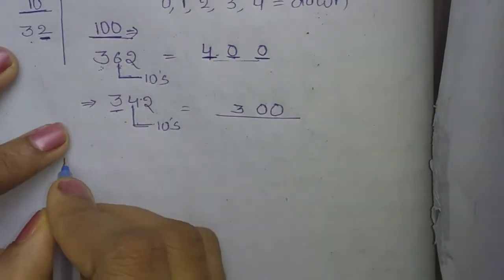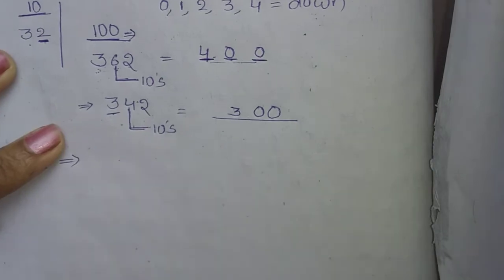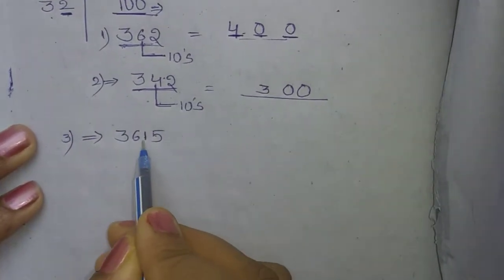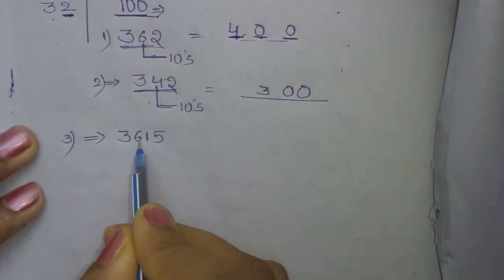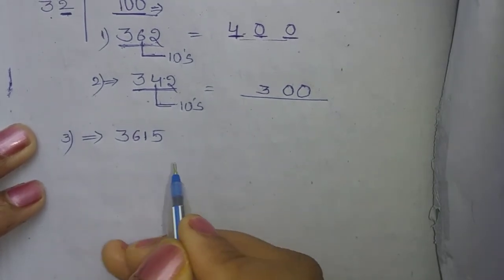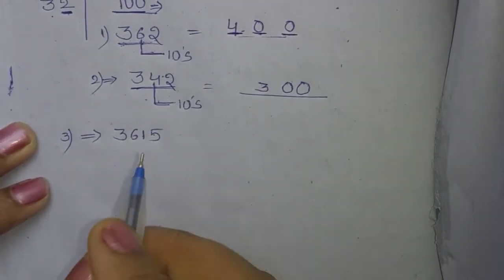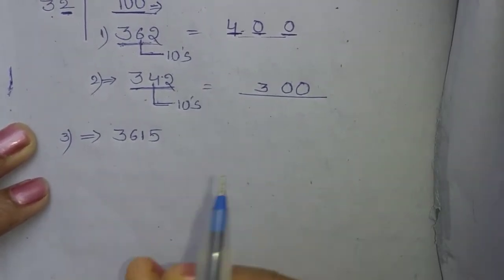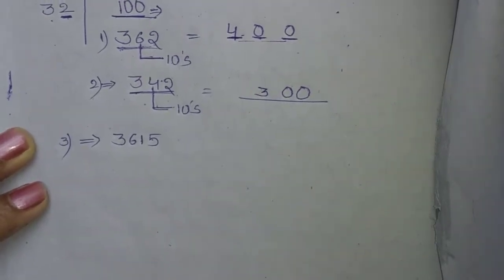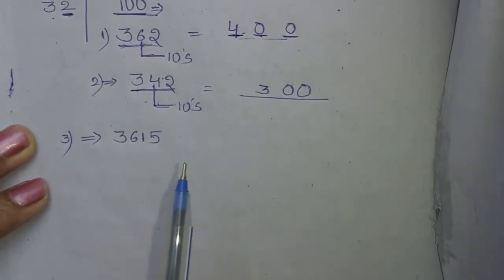For example, here we have place values: 1s, 10s, 100s, and 1000s. We have the place for 10s, 100s, and 1000s. This is how we find the nearest hundred.